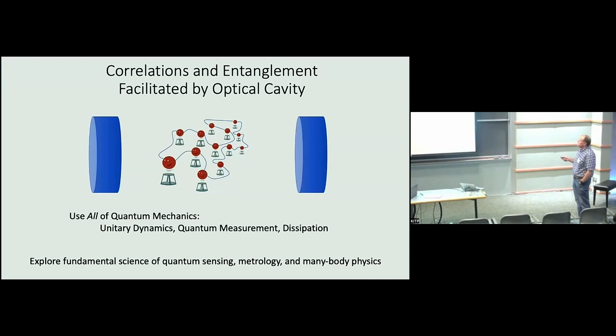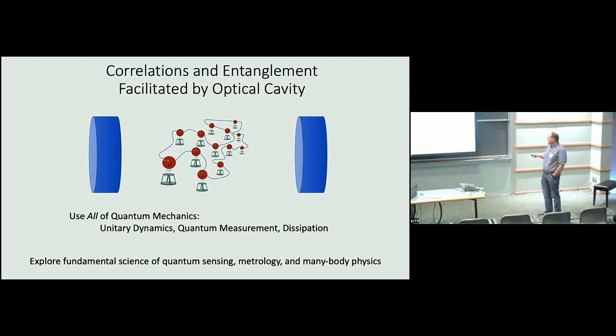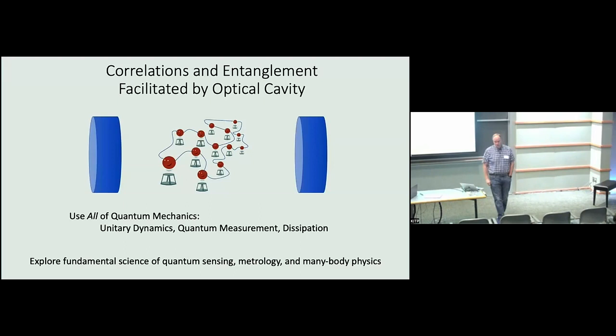We're going to put these atoms inside of an optical cavity — a high-finesse cavity where light bounces back and forth many times — and that's going to create these desired effects. We also want to use all of quantum mechanics: unitary dynamics, the quantum measurement process, and dissipation. The broad theme is exploring the fundamental science of quantum sensing, metrology, and many-body physics including quantum simulation.